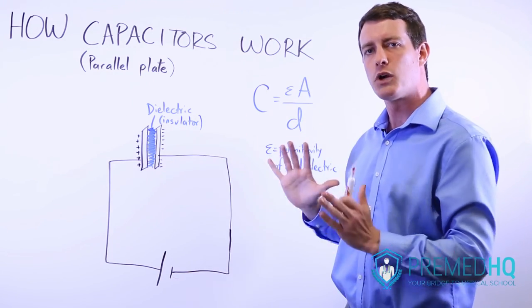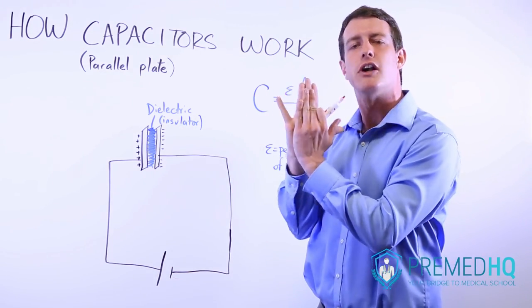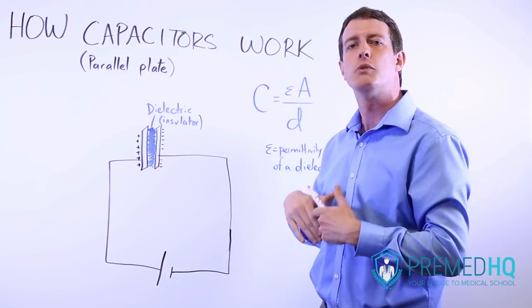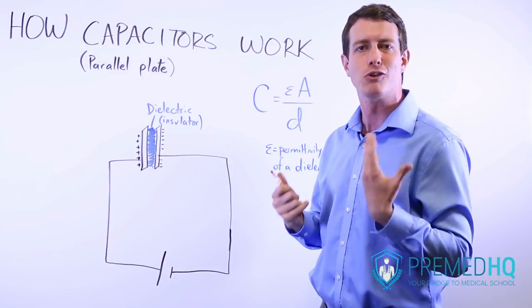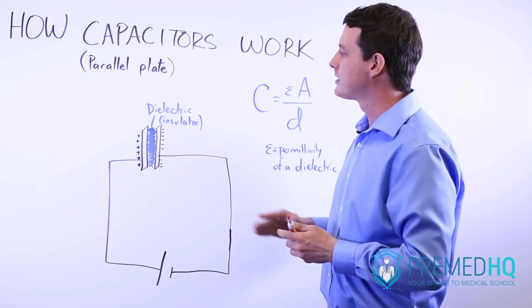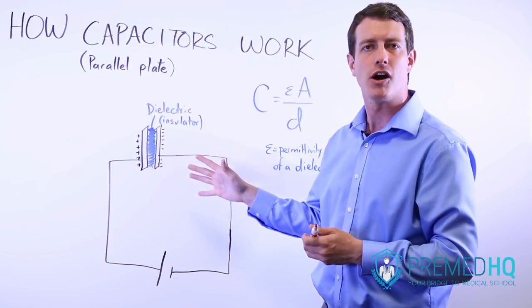The ideal capacitor is one with very large plates that are very close together. Those are the ones that can store the most energy and have the greatest capacitance, and thus can set up the most powerful dipoles.